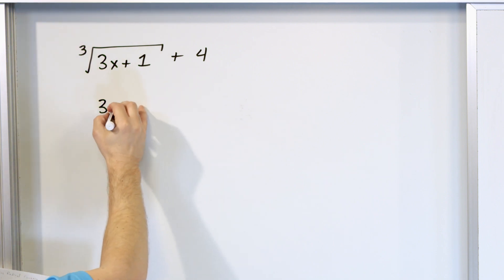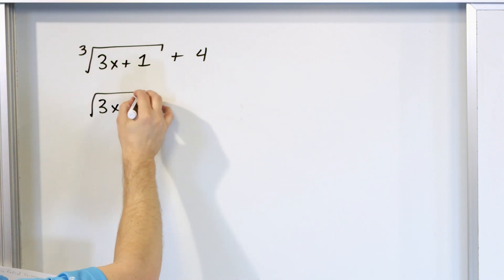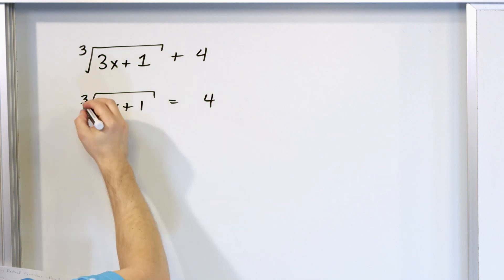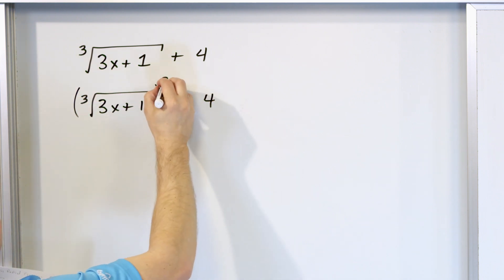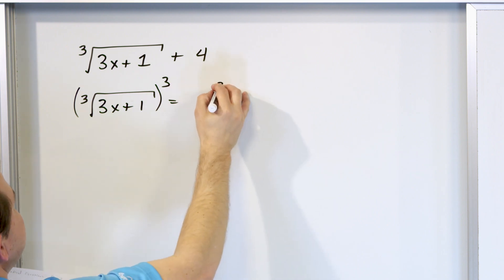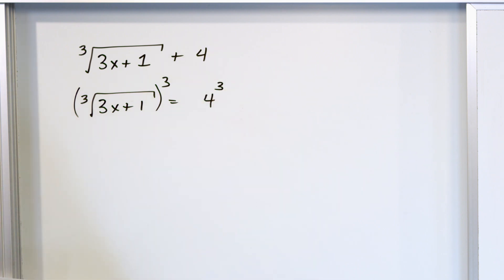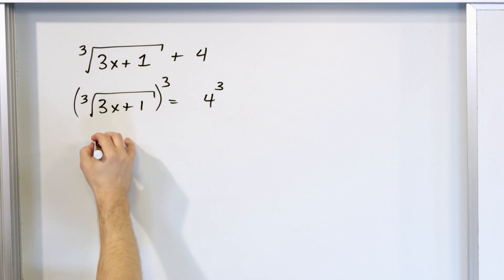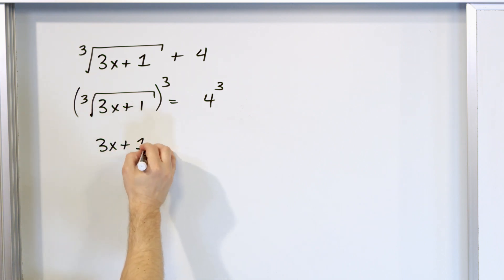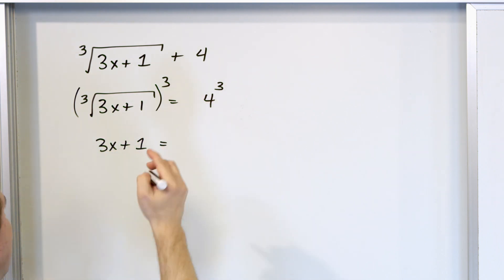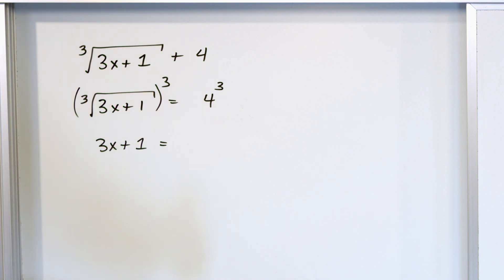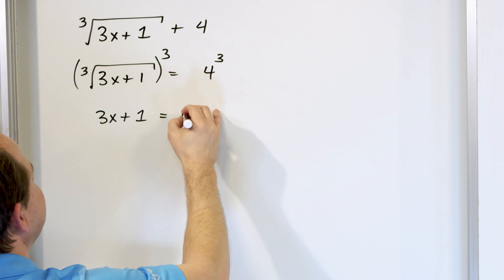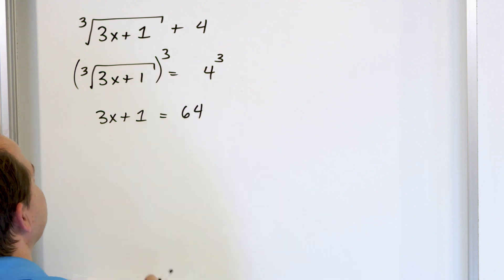Let me rewrite it. You have the cube root of 3x plus 1, and on the right you have 4. So to undo the cube root, you have to cube the left-hand side, which means you have to cube the right-hand side as well. The cube cancels with the cube root, leaving 3x plus 1 on the left. And then what is 4 cubed? That's 4 times 4 times 4. 4 times 4 is 16, and 16 times 4 is 64. That's what you get on the right-hand side.